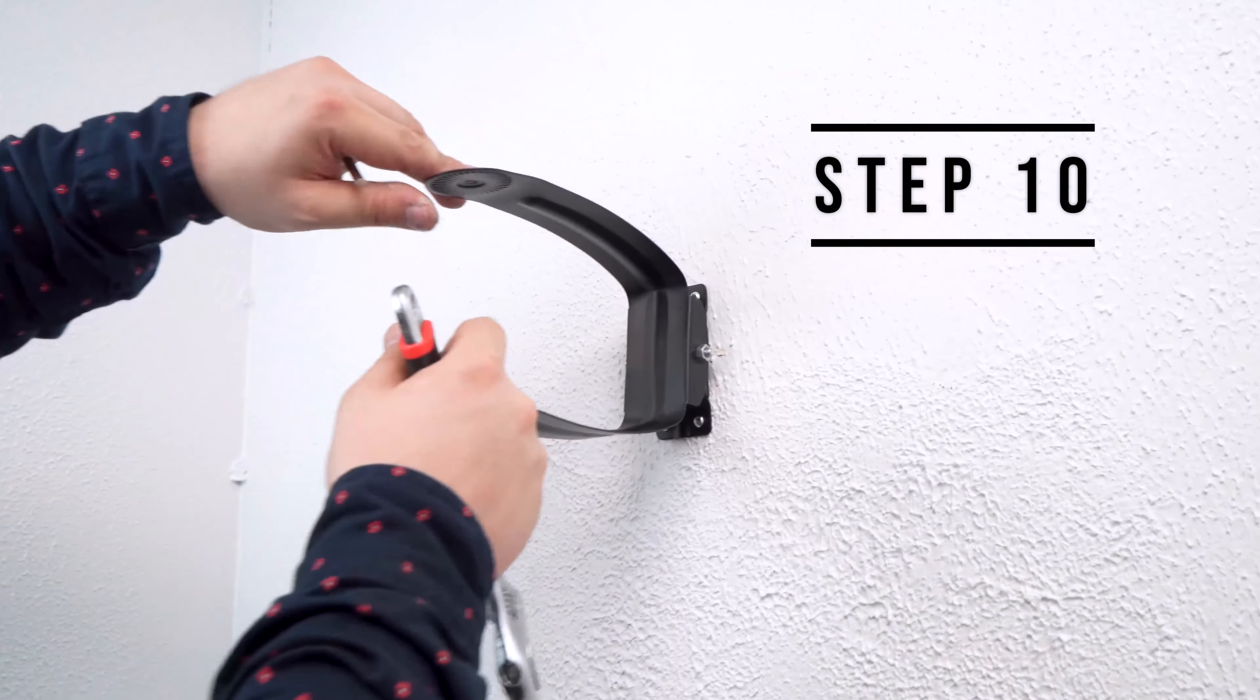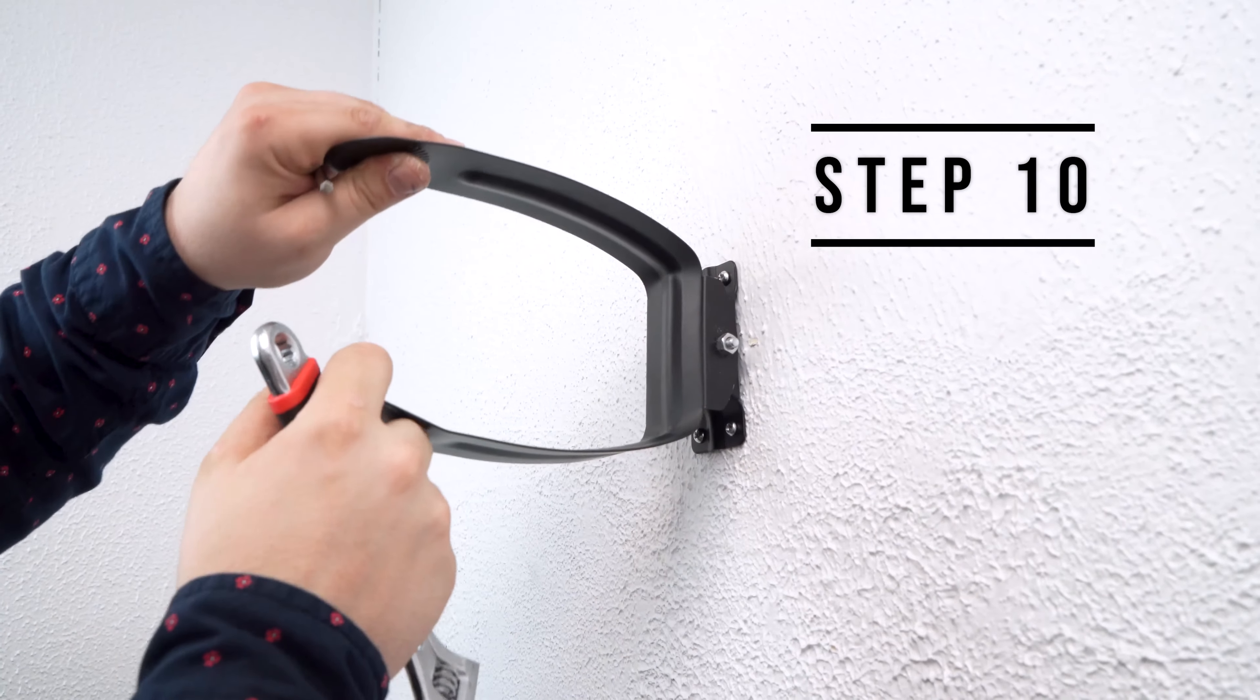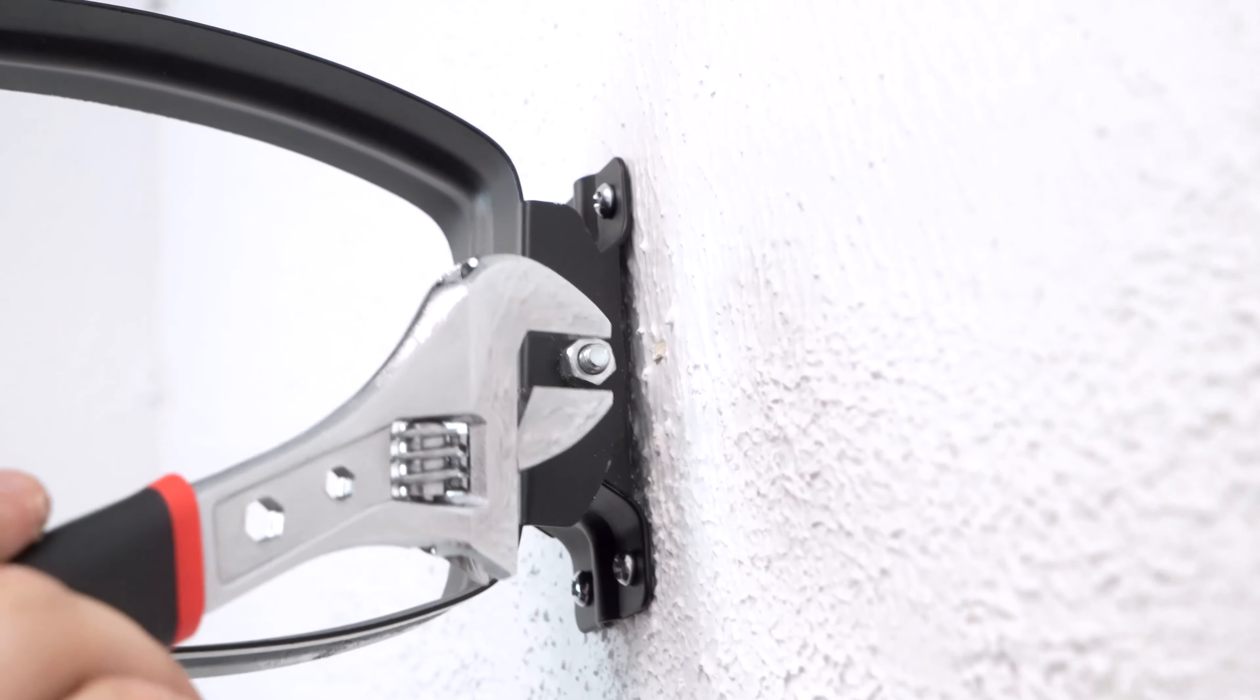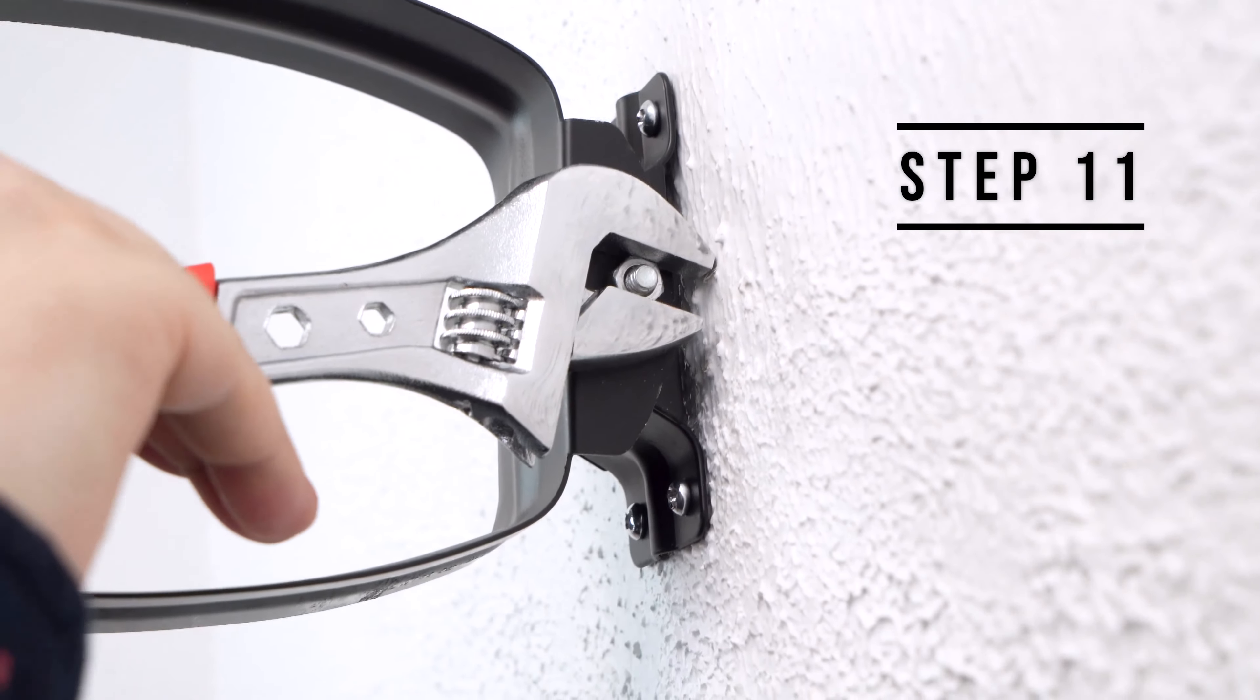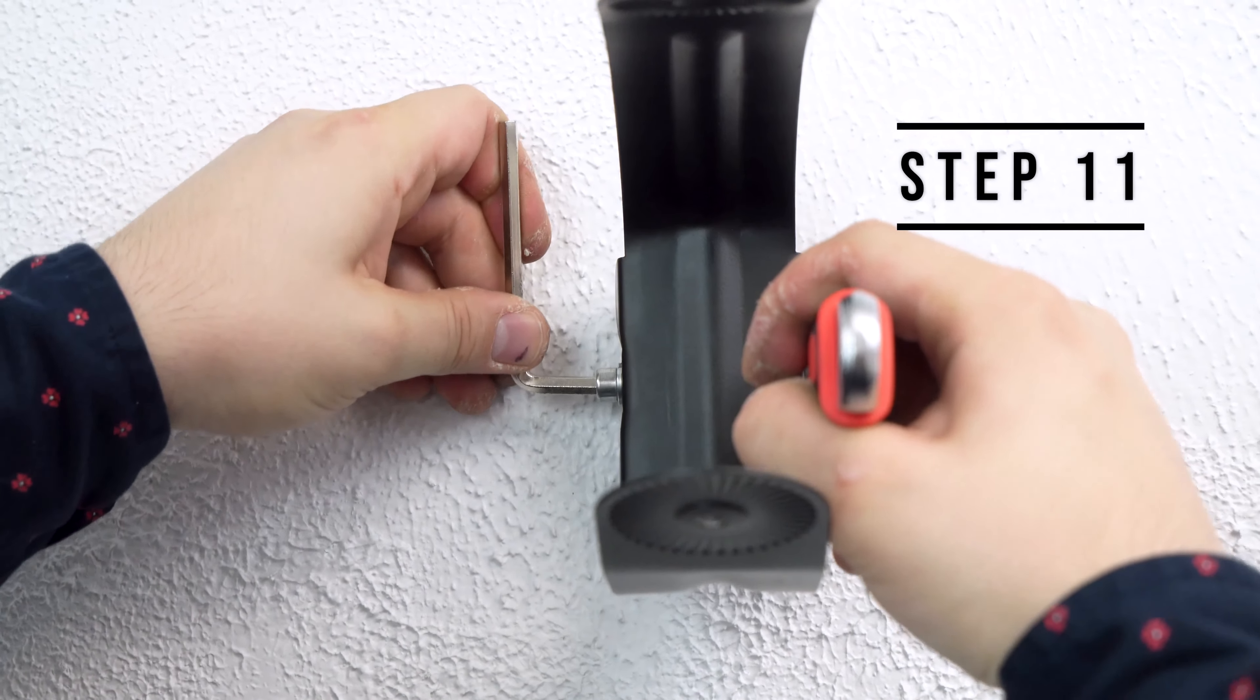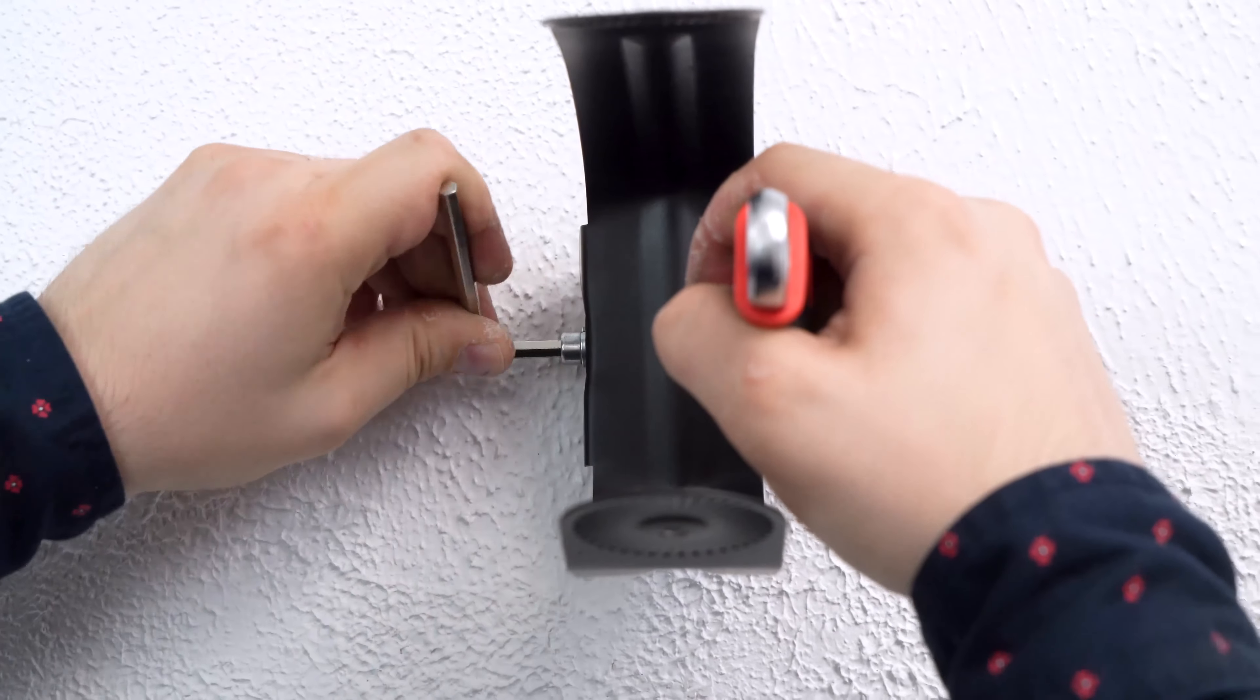Once again for step number ten we're going to adjust the angle of the speaker, in this case let's say we wanted to have it centered. Then at this end we're going to secure the nut with our adjustable wrench or a pair of pliers whatever you have and on the other side with the allen key I'm going to tighten the hex bolt as much as I can.